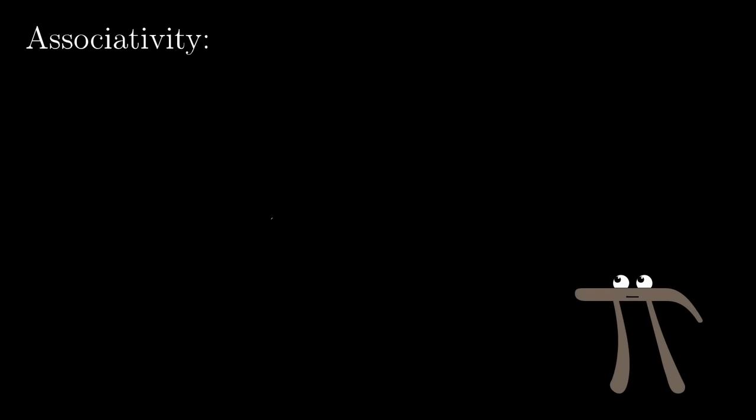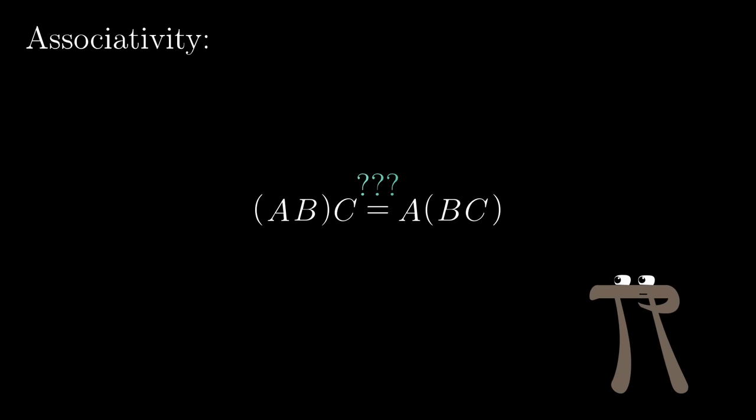I remember when I first took linear algebra, there was this one homework problem that asked us to prove that matrix multiplication is associative. This means that if you have three matrices, A, B, and C, and you multiply them all together, it shouldn't matter if you first compute A times B, then multiply the result by C, or if you first multiply B times C, then multiply that result by A on the left. In other words, it doesn't matter where you put the parentheses.